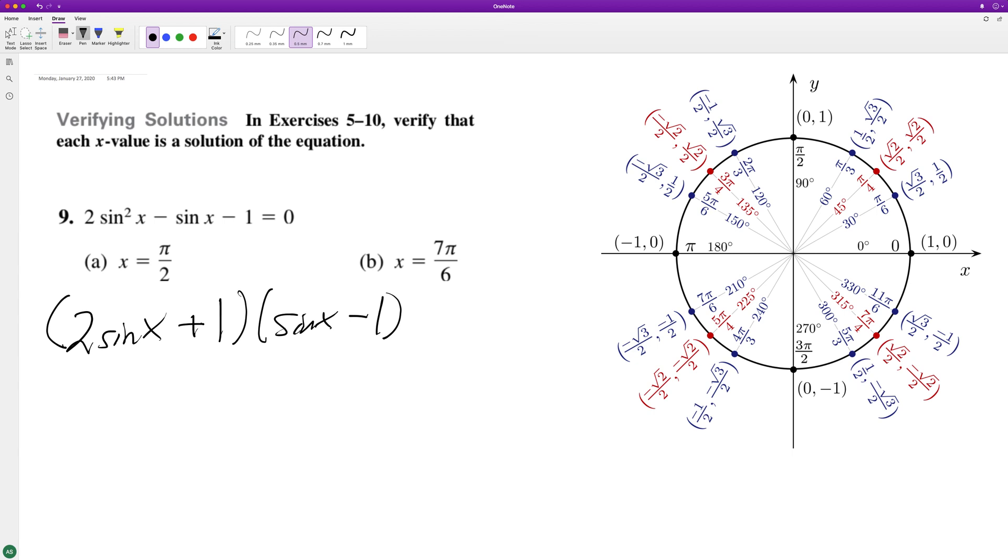So to get this equal to zero, we need sine of x to equal negative one half.